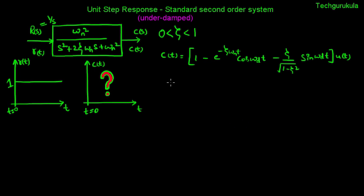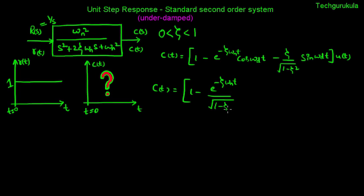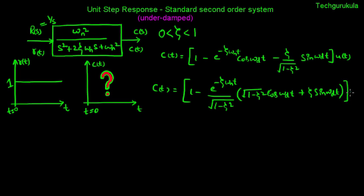We can further simplify C of t by taking e to the power minus zeta omega n t as a common factor. C of t can be written as 1 minus e to the power minus zeta omega n t over square root of 1 minus zeta squared, times the square root of 1 minus zeta squared times cos omega d t plus zeta times sin omega d t, all times u of t.